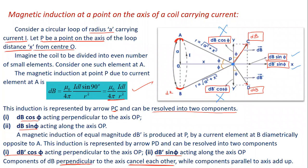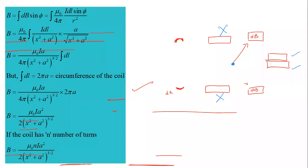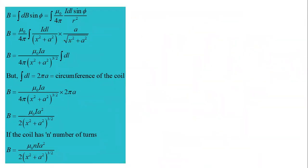The total magnetic induction at point P due to the current-carrying coil is given by integration of dB·sinφ. Substituting dB = (μ₀/4π) · I·dl / r², the expression becomes the integral of (μ₀/4π) · I·dl·sinφ / r².